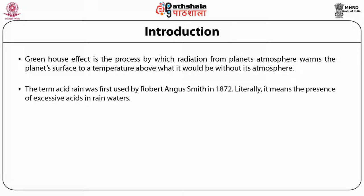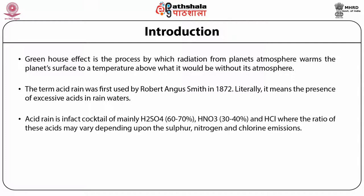The term acid rain was first used by Robert Angus Smith in 1872, which means the presence of excessive acids in rainwater. Acid rain is in fact a mixture of mainly sulfuric acid, nitric acid and hydrochloric acid, where the ratio of these acids may vary depending upon the sulfur, nitrogen and chlorine emissions.